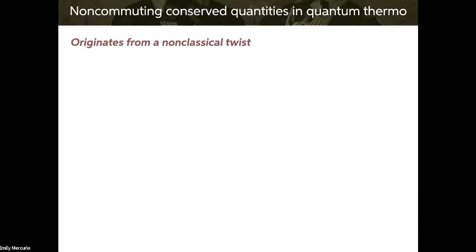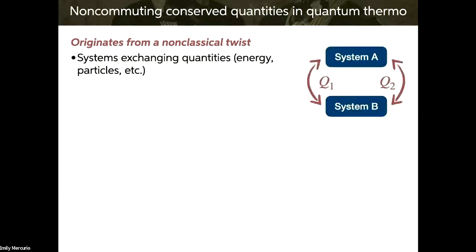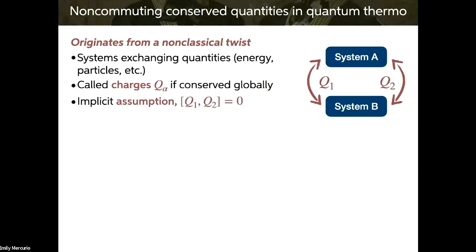This is non-commuting conserved quantities in quantum thermodynamics. The subfield originates from introducing a non-classical twist into a very commonplace problem. Across physics, systems exchange quantities such as energy or particles. If these quantities are conserved globally, we call them charges. This isn't strictly just electric charge, but any globally conserved quantity.